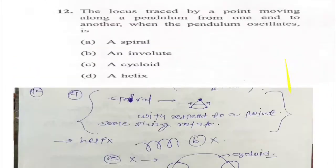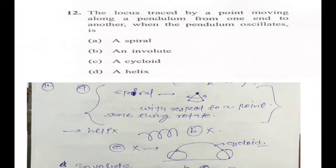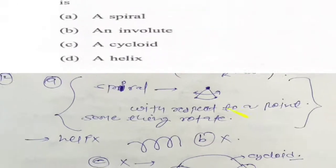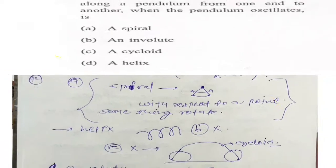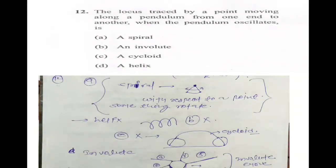This is the locus traced by a point on a pendulum. A pendulum rotates about a fixed point. In a spiral, a point moves around a fixed pole — so the answer is spiral, option A.